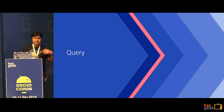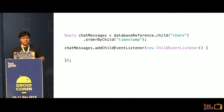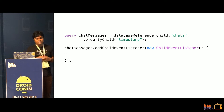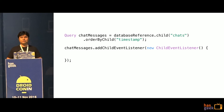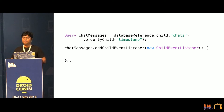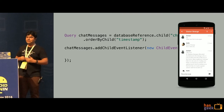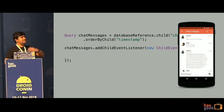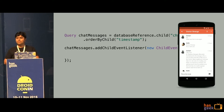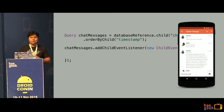Next, let's look at querying — how to filter and sort information. You can get a reference to your database, call .child() to get a child of that JSON tree node, and then call orderByChild to order by one of the fields. For a chat application, you'd order everything by timestamp. Once you do that, you can set a listener and do everything as before. Apart from sorting, you also have options for filtering — getting the last few values and so on.